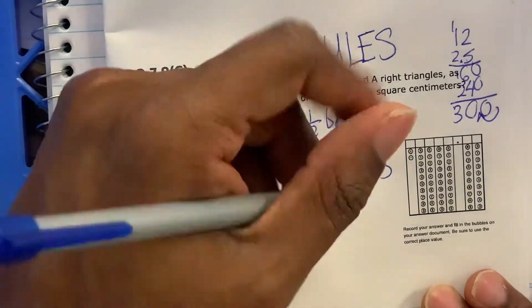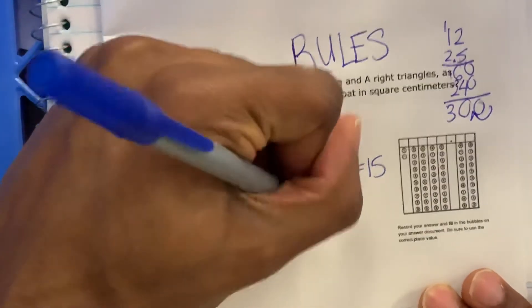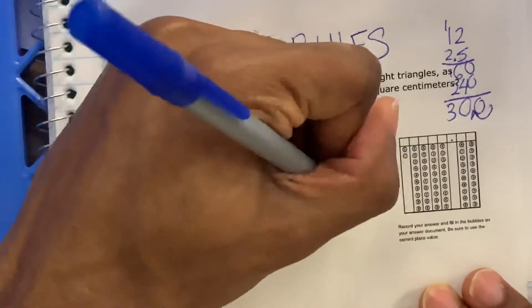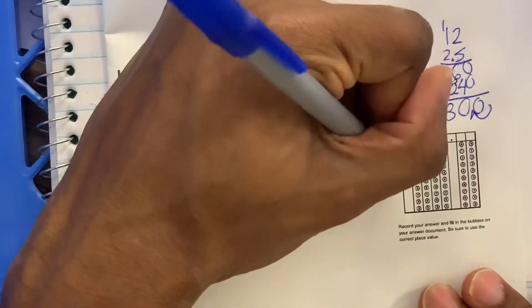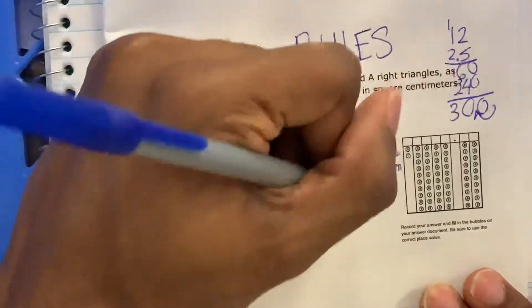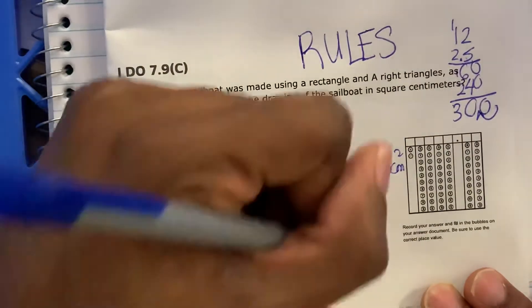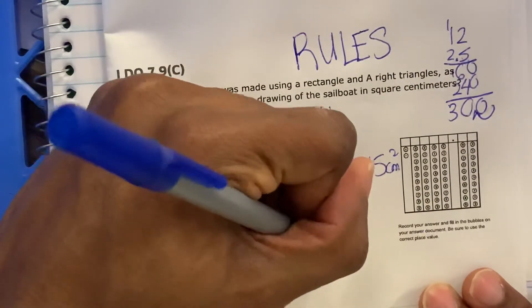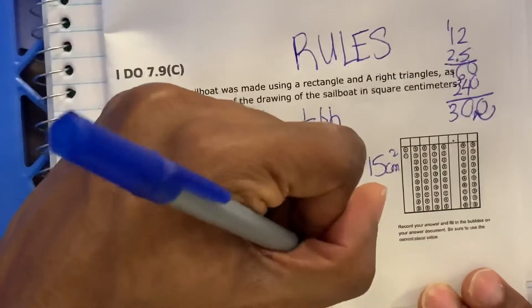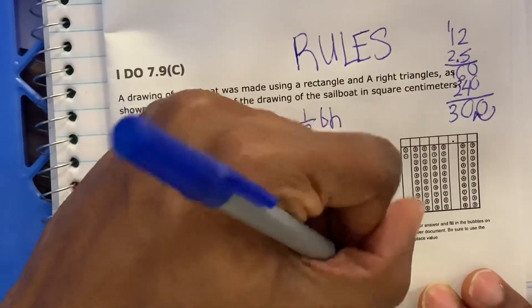So the area here is 30 centimeters squared and this area here is 15 centimeters squared. We're going to add these up, 15 plus 30. So 30 plus 15 is 45 centimeters squared.